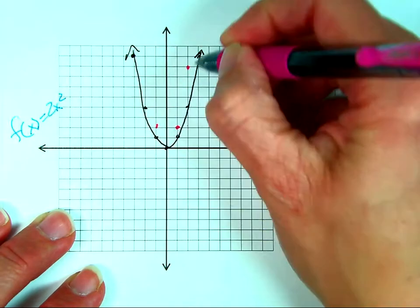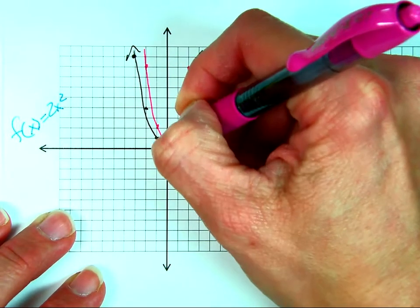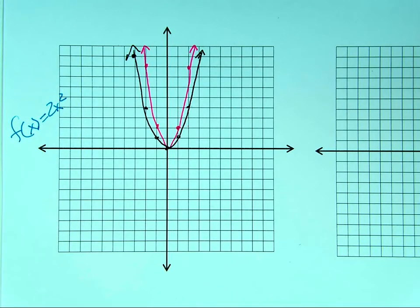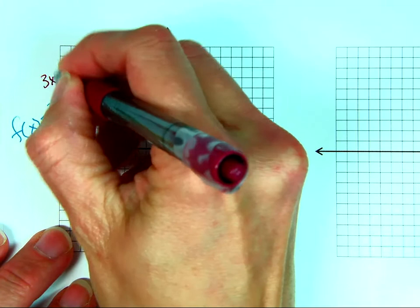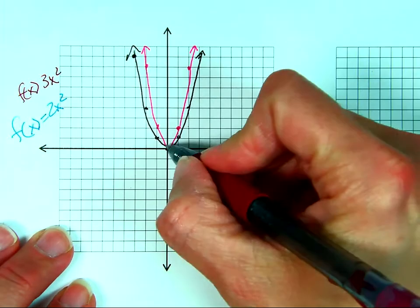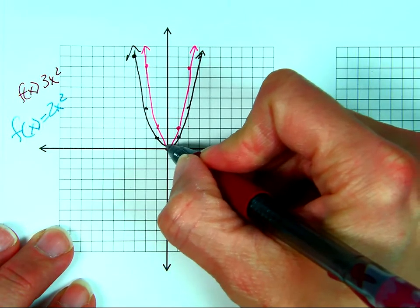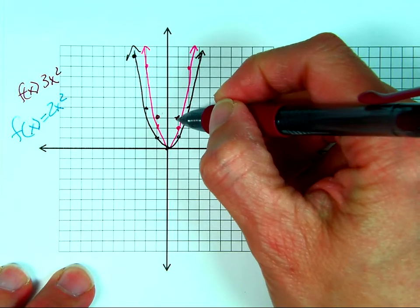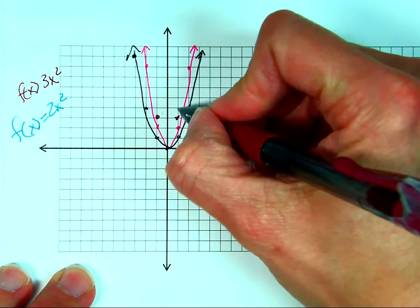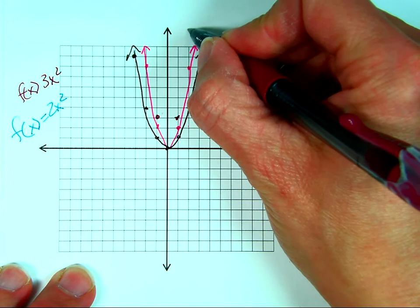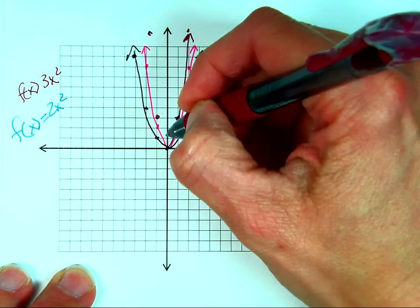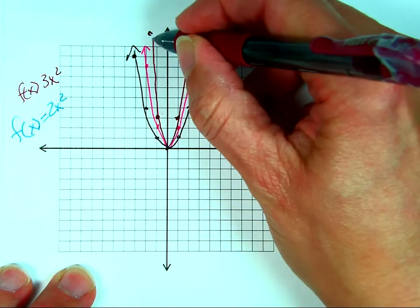Using the axis of symmetry, you can see that 2x² is vertically stretched — a little skinnier than x². For 3x², instead of going over 1 and up 1, we go over 1 and up 3. Then from the pattern we'd go up 9 more, which is off my grid, but you could do it on bigger graph paper. And you can see that's even more vertically stretched.